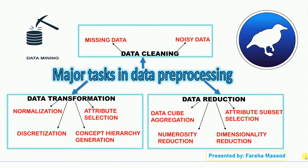For noisy data, we can do three things: binning method, regression, and clustering. The binning method works on sorted data to smooth it. When we talk about regression, data can be made smooth by fitting it to a regression function. When we talk about clustering, what we do is group similar data into clusters.